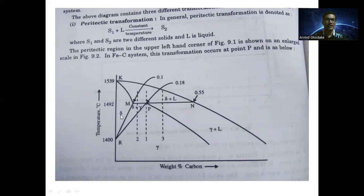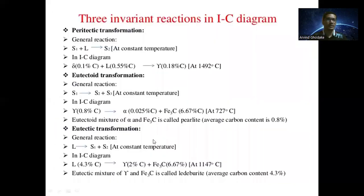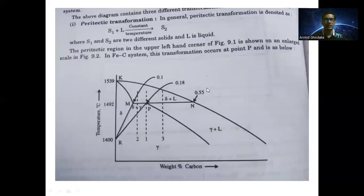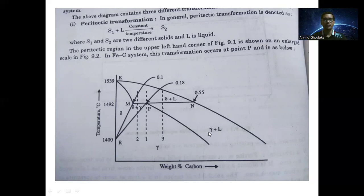The first solid is delta ferrite, and delta plus liquid gives austenite at 1492 degrees Celsius. At this temperature line, different regions exist: liquid region, delta ferrite region, delta plus liquid region, delta plus austenite region, and austenite plus liquid region.